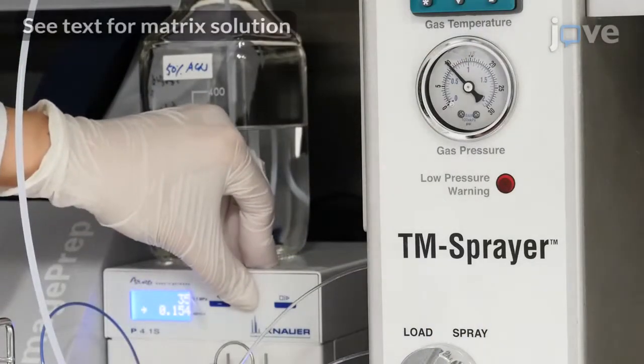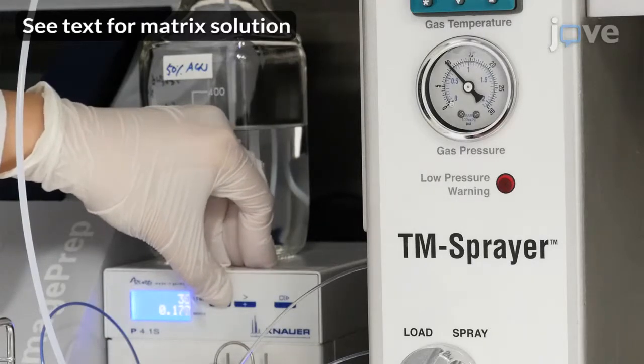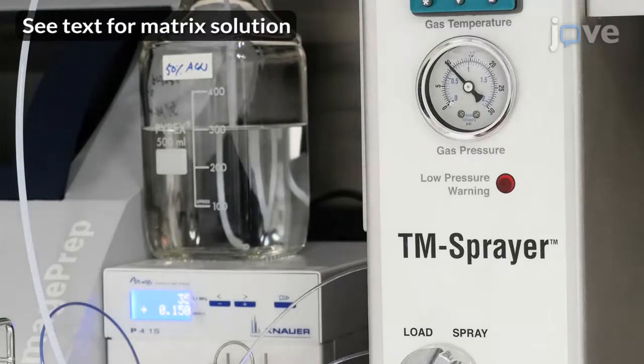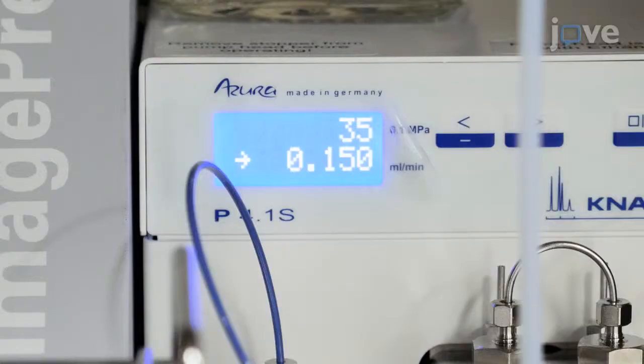Alternatively, to spray the matrix solution on the tissue surface with an automatic sprayer, use a solvent pump system set at 10 psi and 0.15 milliliters per minute to deliver the matrix solution. A constant flow of heated sheath gas will be delivered conjointly with the matrix solution spray.